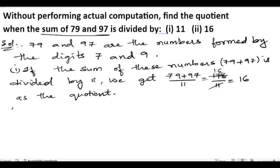Next, let us see the second bit. So in the second bit they said that if the sum of the numbers, 79 and 97, 79 plus 97, is divided by the sum of the digits.